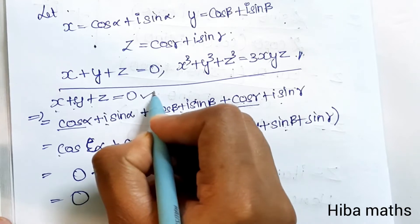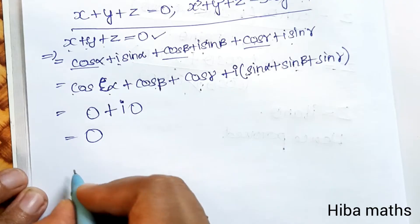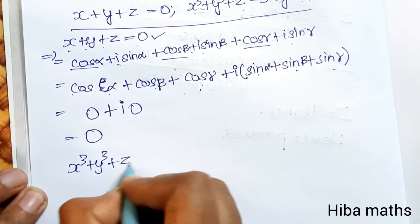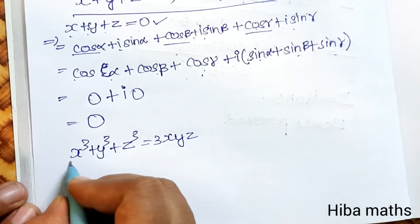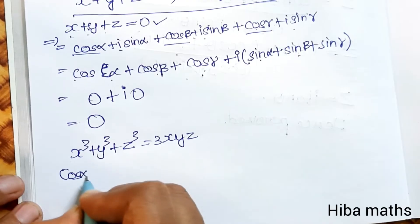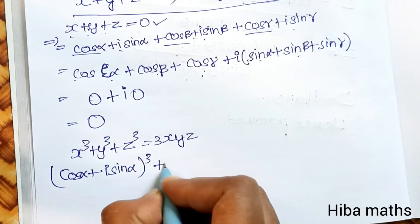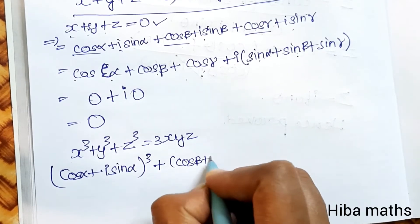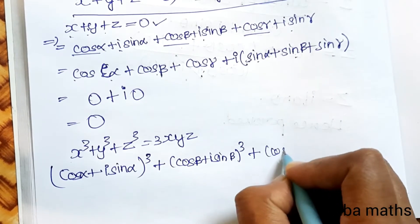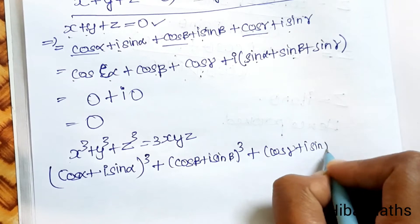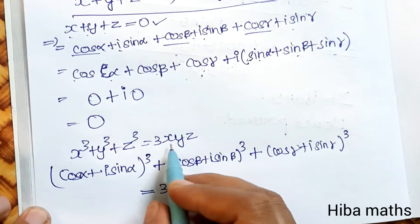Since x + y + z = 0, we use the identity: x³ + y³ + z³ = 3·x·y·z. So (cos α + i·sin α)³ + (cos β + i·sin β)³ + (cos γ + i·sin γ)³ = 3·x·y·z.